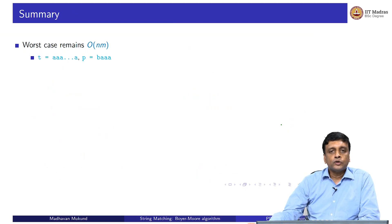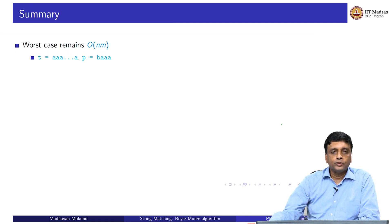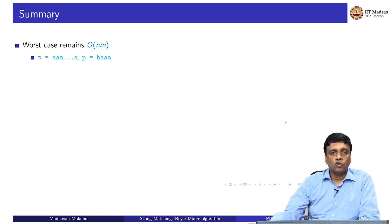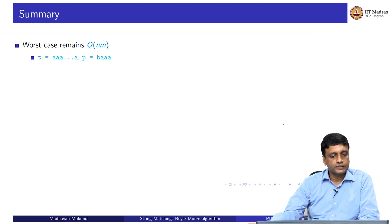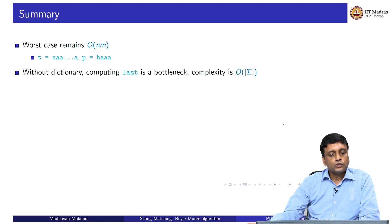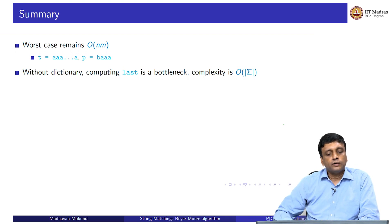Though this heuristic is attractive in practice, unfortunately we cannot claim anything good in the worst case. If we take a text with all A's and a pattern with 1 B followed by m minus 1 A's, this will again take O(n times m) time even with this heuristic, because we do not get any non-trivial shifts. There is also a consideration about computing the 'last' dictionary.